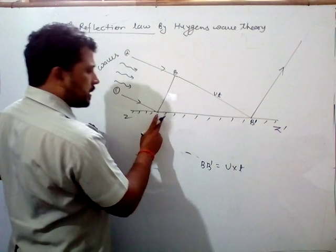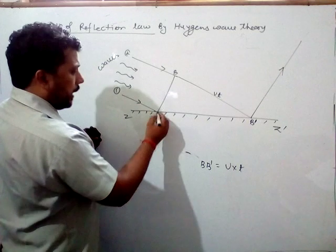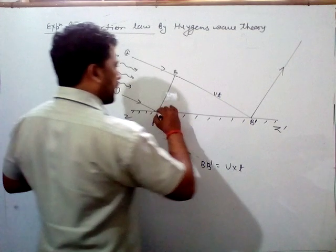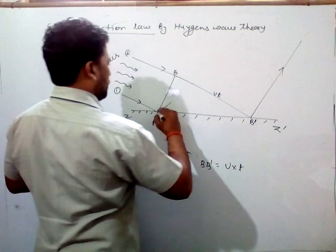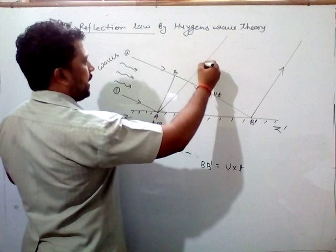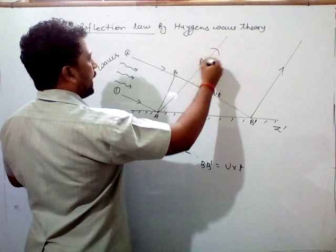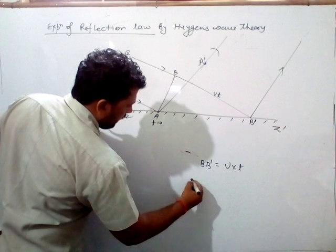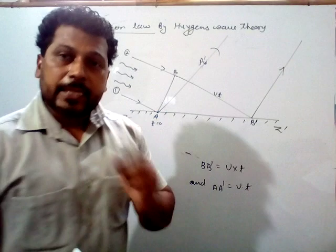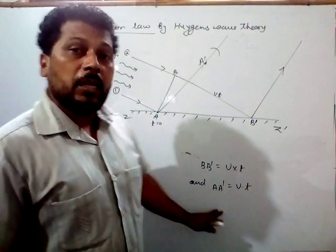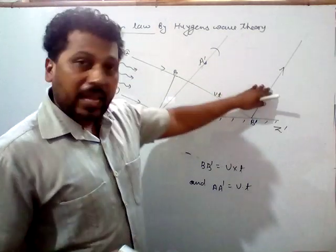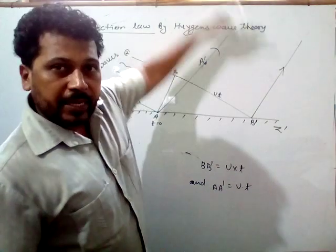For the same time, wave 1 is also reflected because it is also in touch of this reflecting surface at point A at T equals zero. Whenever it gets reflected, let me consider that in the same time it will have reached any point A', so AA' is also equal to V into T.